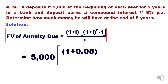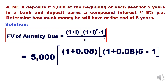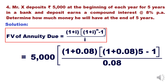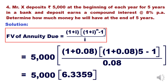Applying the annuity due formula: 5,000 × (1 + 0.08) × [(1 + 0.08)^5 - 1] / 0.08. Note: the exponent is power 5. Simplifying the bracket gives 6.3359 — the same factor we obtained earlier. Further simplifying the equation, we again get a future value of 31,680 rupees.